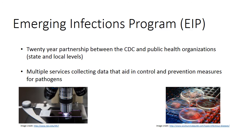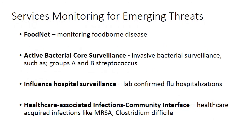Newer methods can lead to quicker identifications of disease agents. Some of the services in place for monitoring emerging threats are FoodNet for monitoring foodborne disease, ABC or active bacterial core surveillance for invasive bacterial groups such as group A and B streptococcus, influenza hospital surveillance, and lab-confirmed flu hospitalizations.